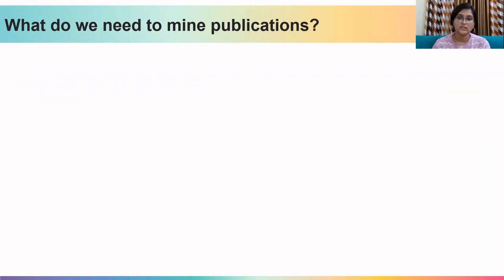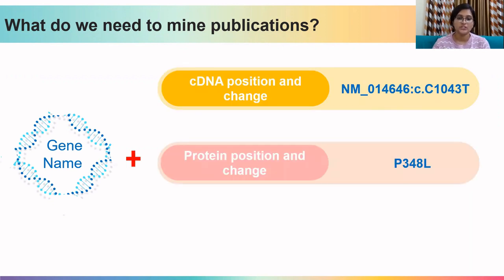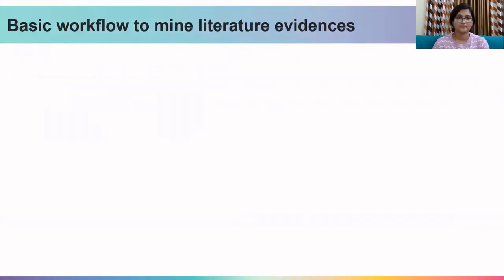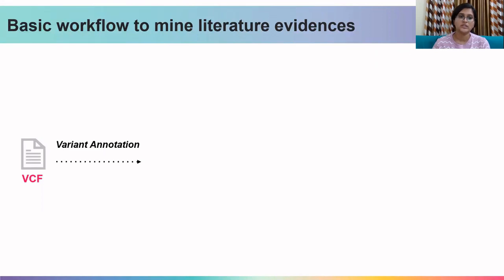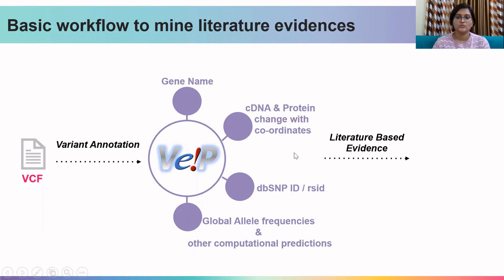What do we need to mine these publications? We need the gene name, the cDNA change and position, the protein change and position, and the dbSNP ID or RSID. The basic workflow starts with the VCF file, which we annotate using VEP as used in previous lectures. VEP provides us with the gene name, the cDNA change and protein change with coordinates, the dbSNP ID or RSID, along with other details such as global allele frequencies and computational predictions. After this, we use these details to mine literature evidences.